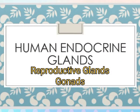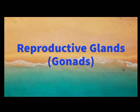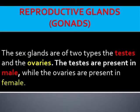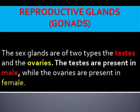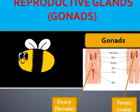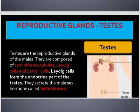Human endocrine glands — in this video we are going to see about reproductive glands, that is gonads. The sex glands are of two types: the testis and the ovaries. The testis are present in males, while the ovaries are present in females. Testis are the reproductive glands of the males.